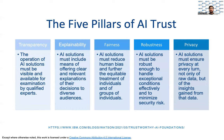Here are these five pillars. Transparency: the operation of AI solutions must be visible and available for examination by qualified experts. Explainability: AI solutions must include means of offering clear and relevant explanations of their decisions to diverse audiences. Fairness: AI solutions must reduce human bias and further the equitable treatment of individuals and of groups of individuals. Robustness: AI solutions must be robust enough to handle exceptional conditions effectively and to minimize security risk. Privacy: AI solutions must ensure privacy at every turn, not only of the raw data, but also of the insights gained from the raw data.